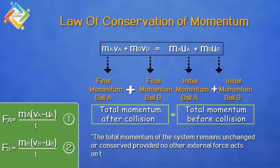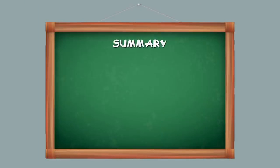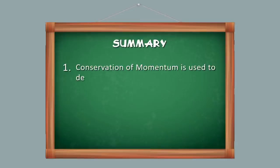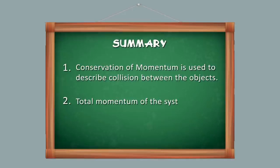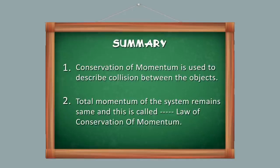Summarizing what we have studied: first, conservation of momentum is used to describe the collisions between objects. Second, the total momentum of the system remains the same — and this is called the law of conservation of momentum.